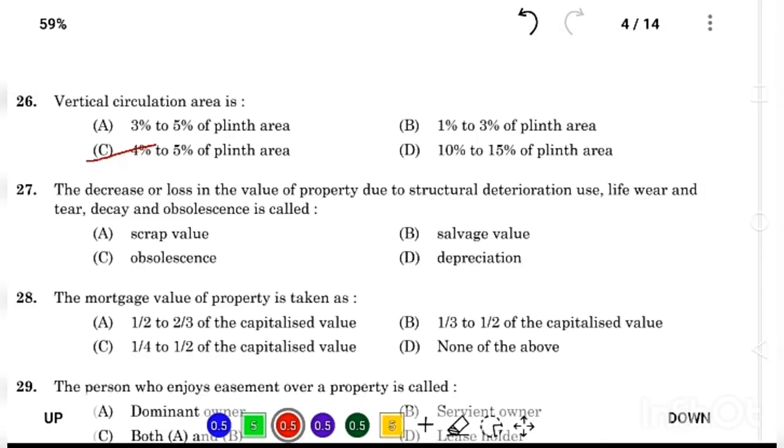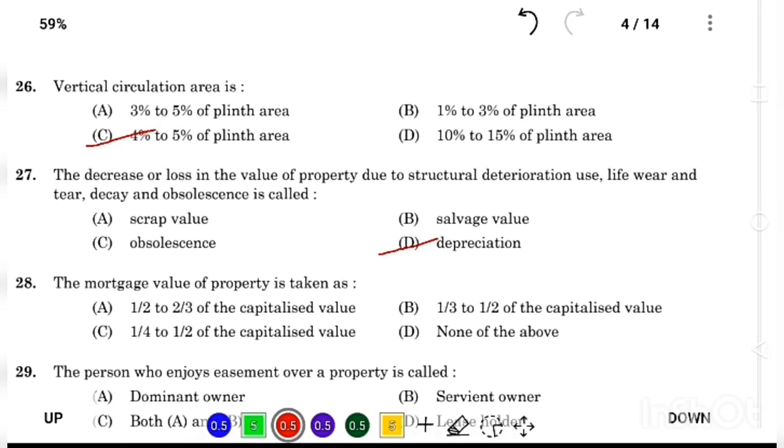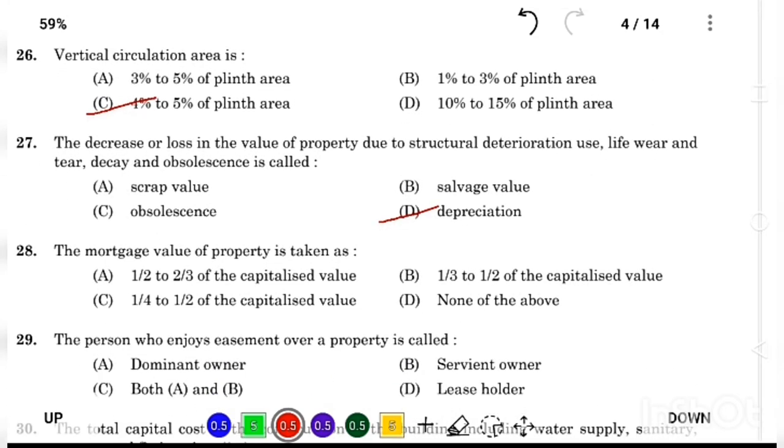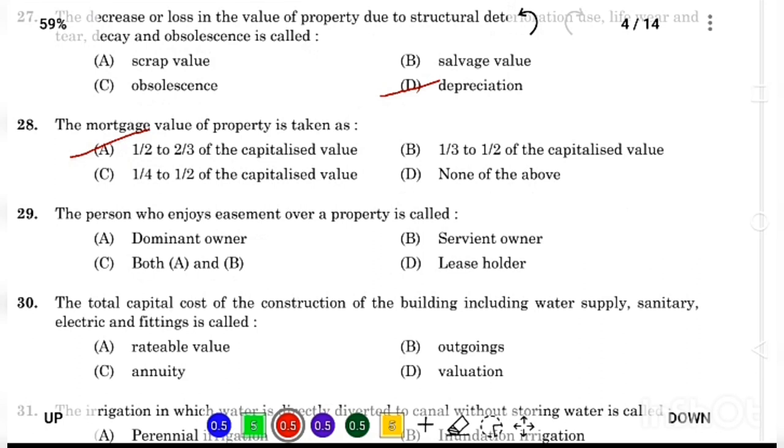The decrease or loss in the value of property due to structural deterioration, use, life, wear and tear, and obsolescence is called Answer Option D, depreciation. The mortgage value of property is taken as Answer Option A, one-half to two-thirds of capitalized value.